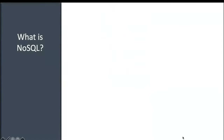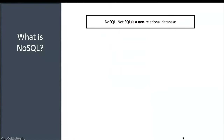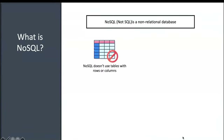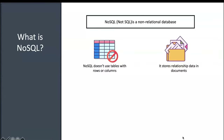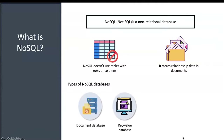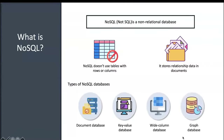NoSQL is a completely non-relational database. Unlike traditional relational databases that use tables with rows and columns, NoSQL stores relationship data in documents. Different types of NoSQL databases are available: document-based, key-value-based, wide-column-based, and graph-based. MongoDB is a purely document-based database.